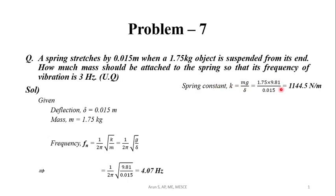We can find the spring constant k to be 1144.5 newtons per meter. Now with this spring constant and the mass of 1.75 attached giving a frequency of 4.07, we want the frequency of vibration to be 3 hertz.